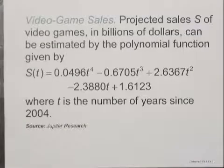Projected sales S of video games in billions of dollars can be estimated by the polynomial function given by S of t equals 0.0496t to the fourth power minus 0.6705t cubed plus 2.6367t squared minus 2.3880t plus 1.6123, where t is the number of years since 2004.